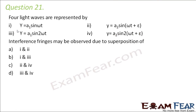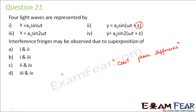Question number 21. Four light waves are represented by four equations. Interference fringes may be observed due to superposition of which waves? For interference, one important criterion is that the sources must be coherent — there must exist a constant phase difference between the waves. Interference can take place between waves 1 and 2 because they have a constant phase difference of epsilon. Similarly, interference can also take place between waves 3 and 4 because again there is a constant phase difference of epsilon between them. So therefore A and B both are the right options.